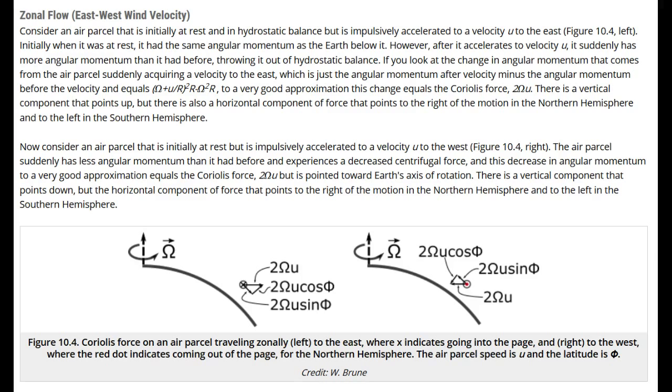We can break the explanation of the Coriolis force into two cases: zonal flow, which is east-west, and meridional flow, which is north-south. The explanation for both cases relies on conservation of angular momentum.